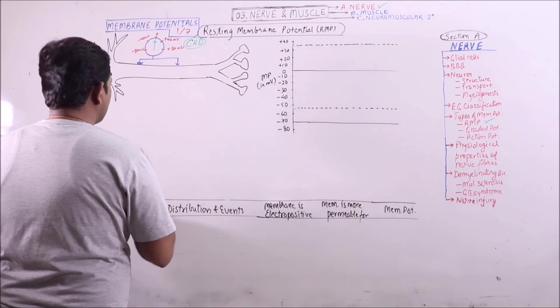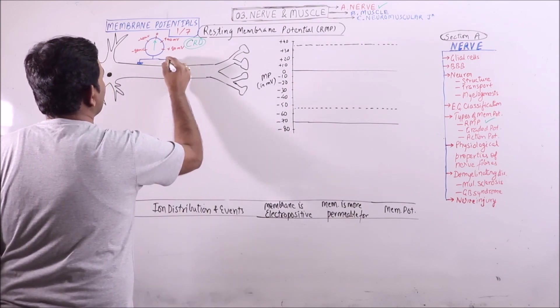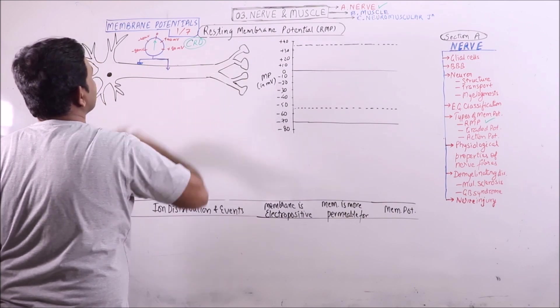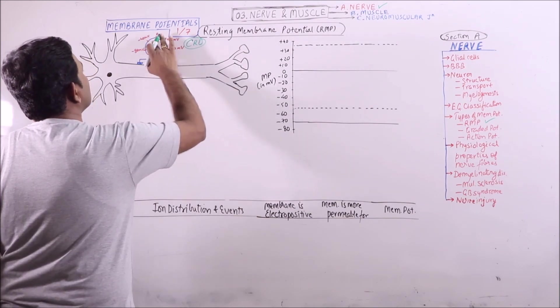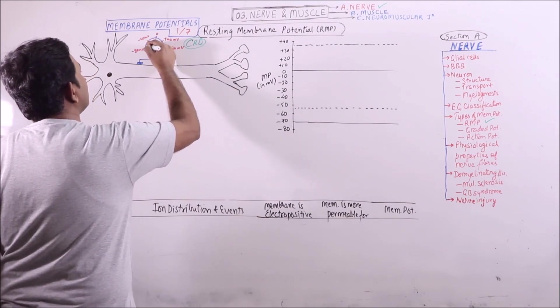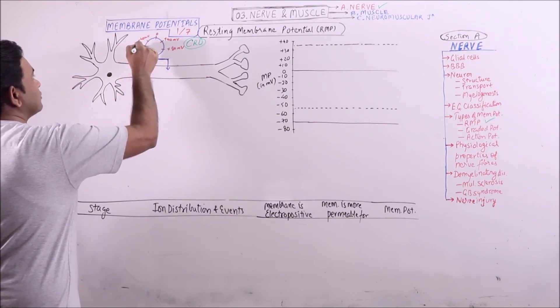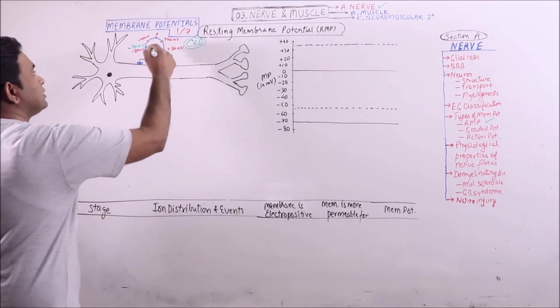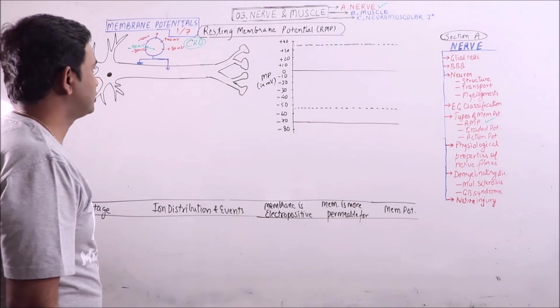But if one of the electrodes is placed inside the cell, then the reading comes out to be minus 70 millivolts. This reading is termed as RMP or resting membrane potential.